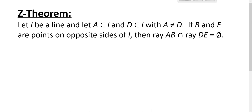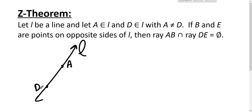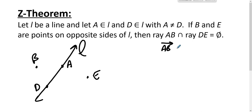The Z theorem says: let L be a line, and let A be on line L and D be on line L with A not equal to D — they're not the same point. If B and E are points on opposite sides of L, then ray AB intersect ray DE is the empty set.